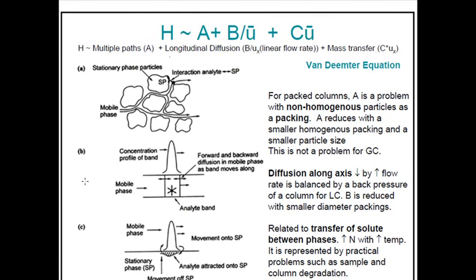The plate height H depends on multiple paths — how many paths the mobile phase and analyte take to pass through the column. For example, the mobile phase can go through different paths: one direction, a second path, a third path. If the mobile phase chooses a shorter path it can travel faster than choosing a longer path. The selection of paths is really important, and this is represented by the A term.